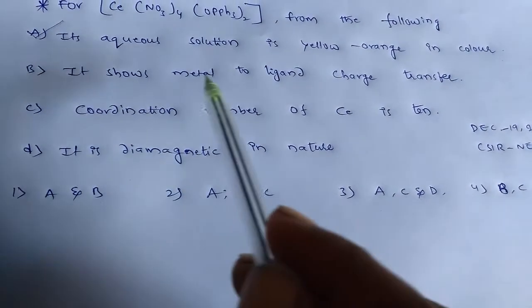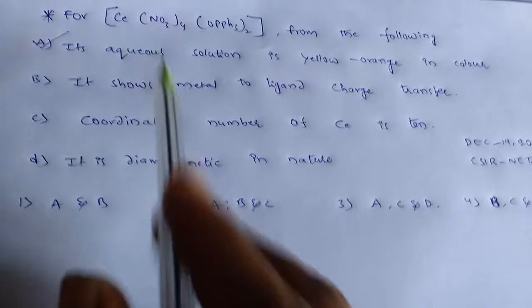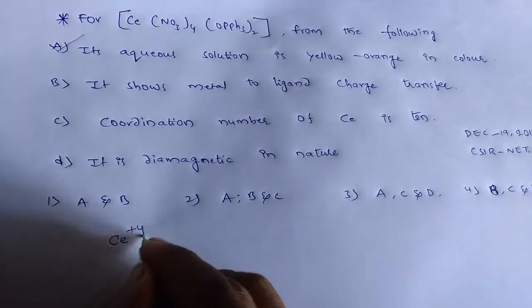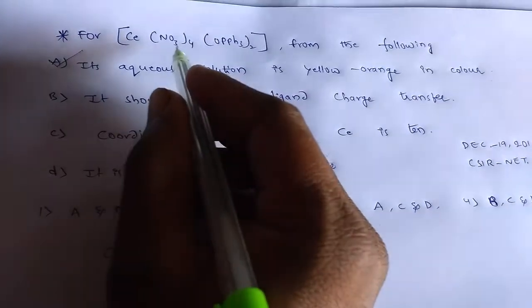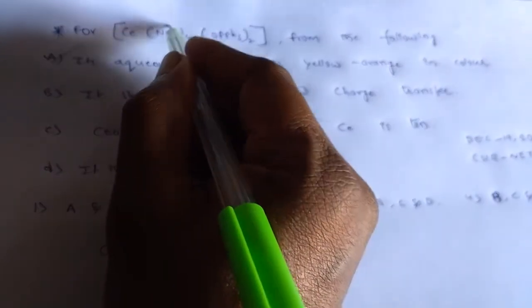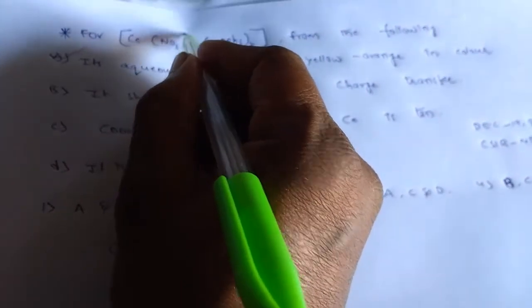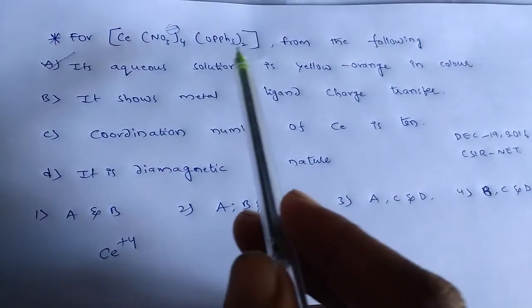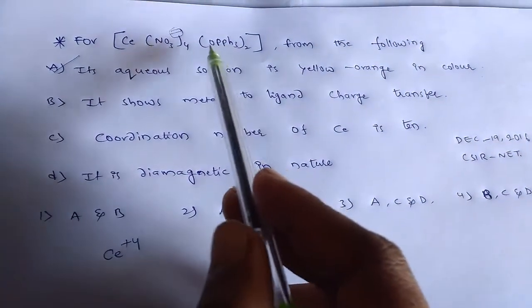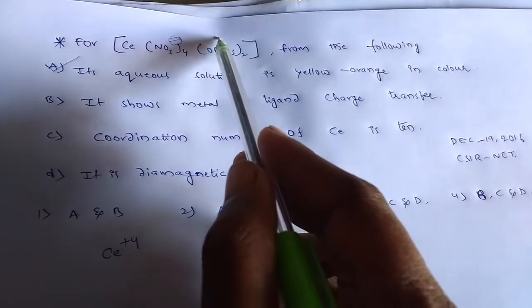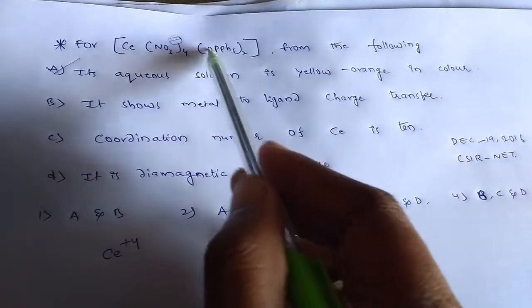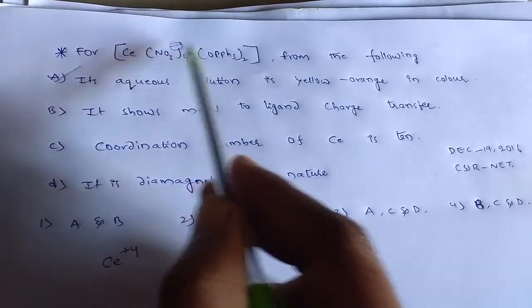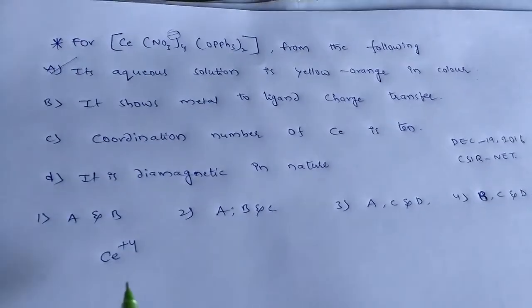Consider the second option. It shows metal to ligand charge transfer. If you observe in the cerium complex, cerium has plus 4 charge because NO3 here has minus charge. And this triphenium ligand is considered as neutral one. So there is no charge on it. Only NO3 has charge, that is minus. Hence minus 4. So that means cerium has plus 4 oxidation state.